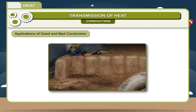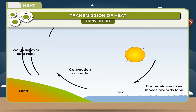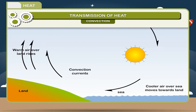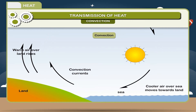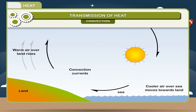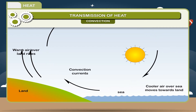Ice is wrapped with sawdust to prevent melting because sawdust is loosely packed and contains trapped air which acts as an insulator. Convection: the transfer of heat in liquids and gases takes place by a process called convection. In this process the molecules move from the hotter part to the colder part of the liquid or gas.